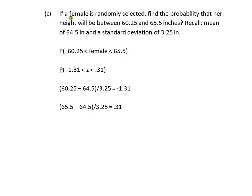We were looking at if a female is randomly selected, find the probability that her height is between 60.25 inches and 65.5 inches. Remember that female height is normally distributed with a mean of 64.5 inches and a standard deviation of 3.25 inches. So this question is asking, what's the probability or percentage that our female is between these two heights?